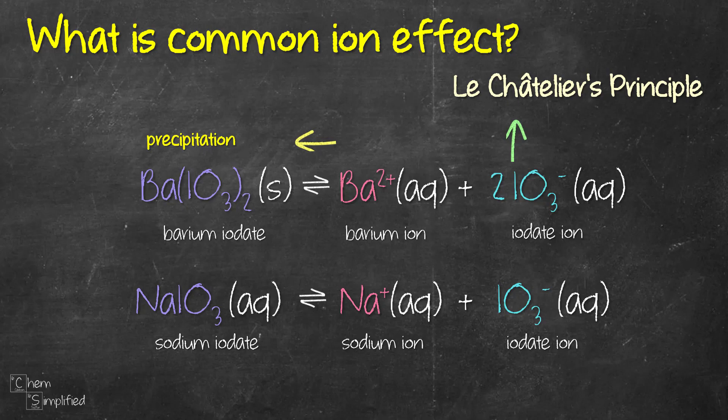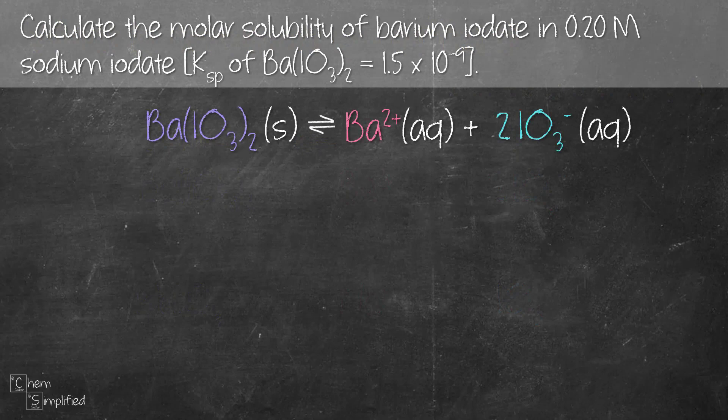But is this true? Well, don't just take my word for it — let's do an actual calculation with numbers. We're given the question: calculate the molar solubility of barium iodate in 0.20 molar of sodium iodate. We're also given the Ksp of barium iodate, which is 1.5 times 10 to the negative 9. To calculate the molar solubility, we're going to need the ICE table.